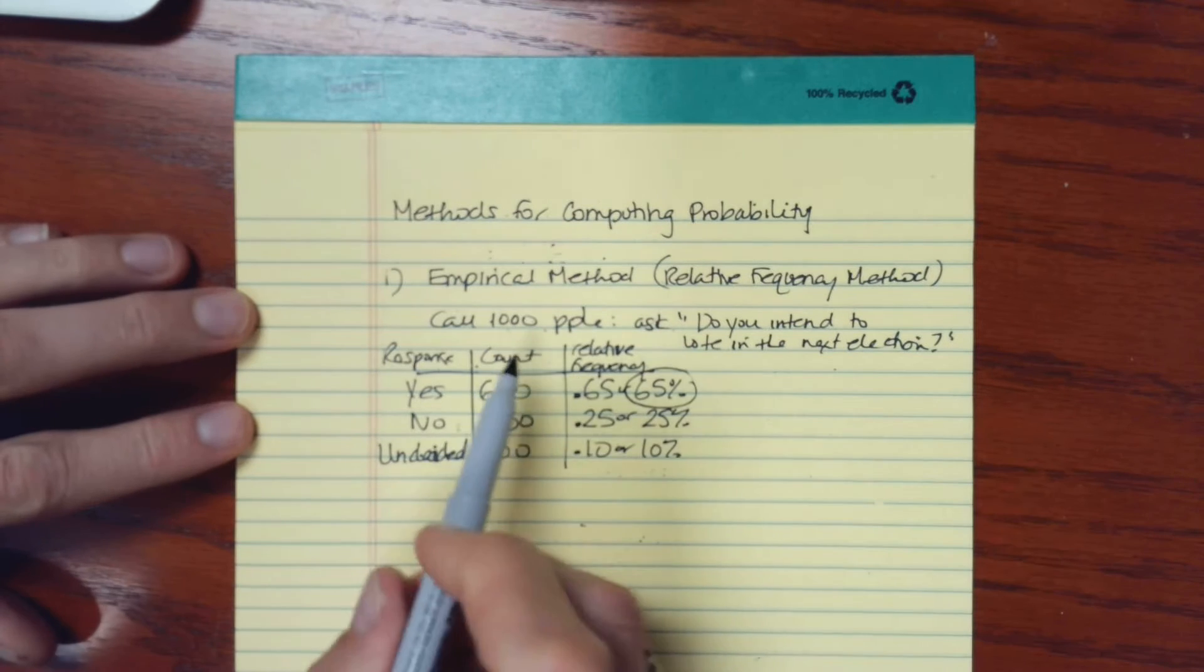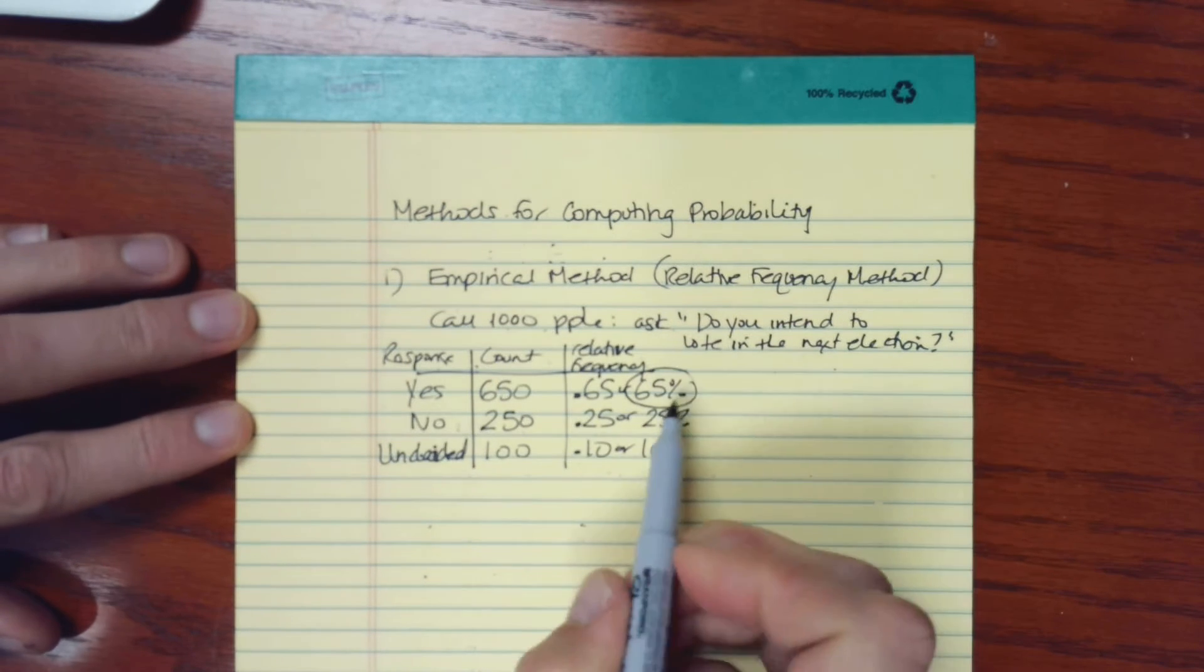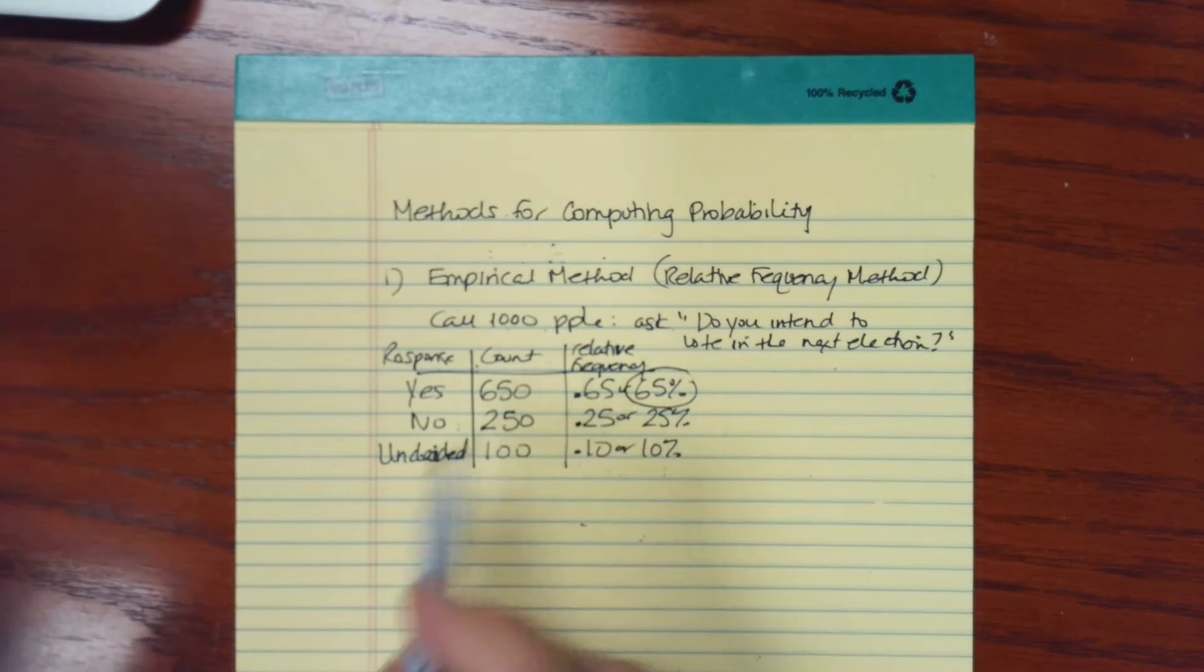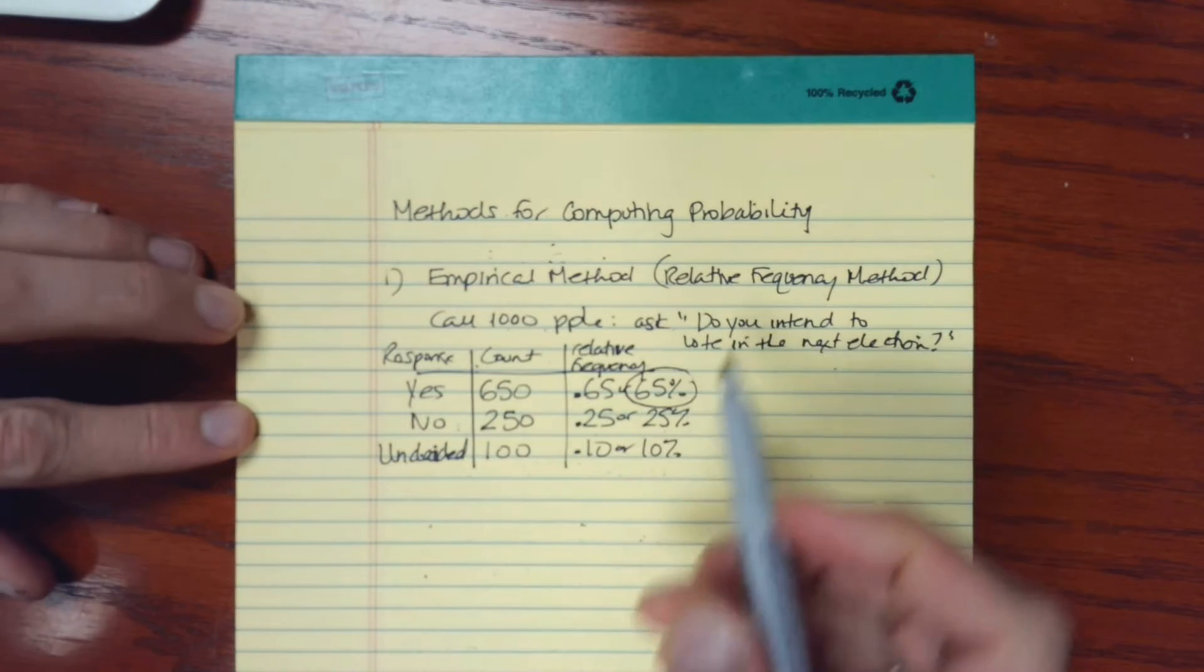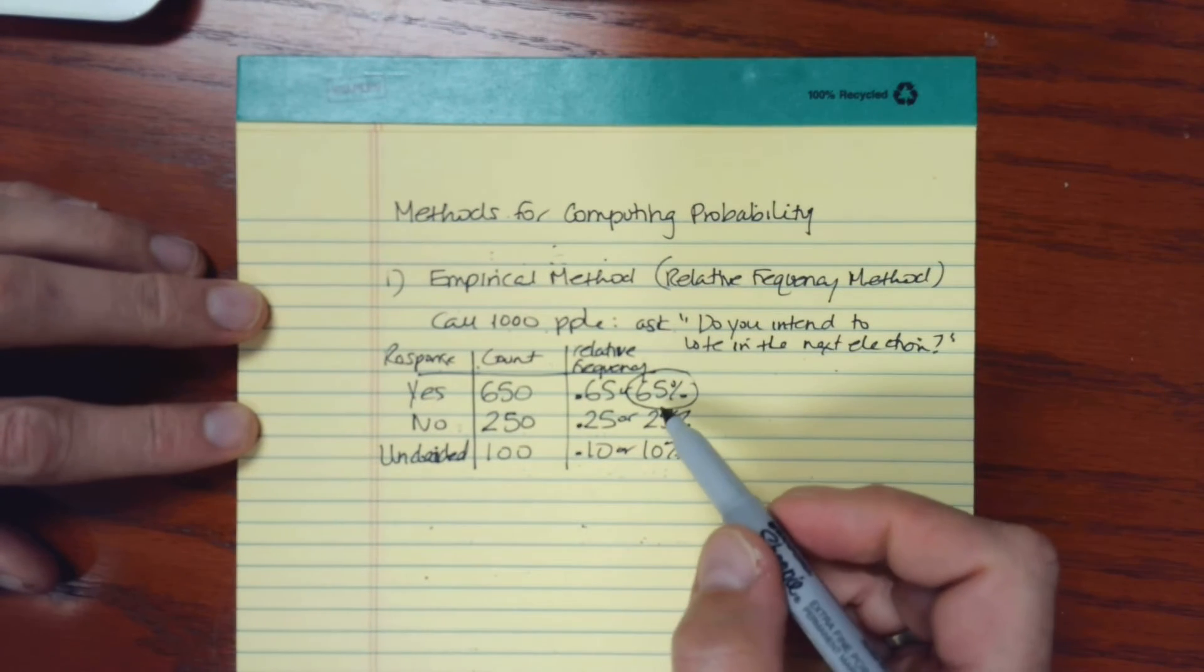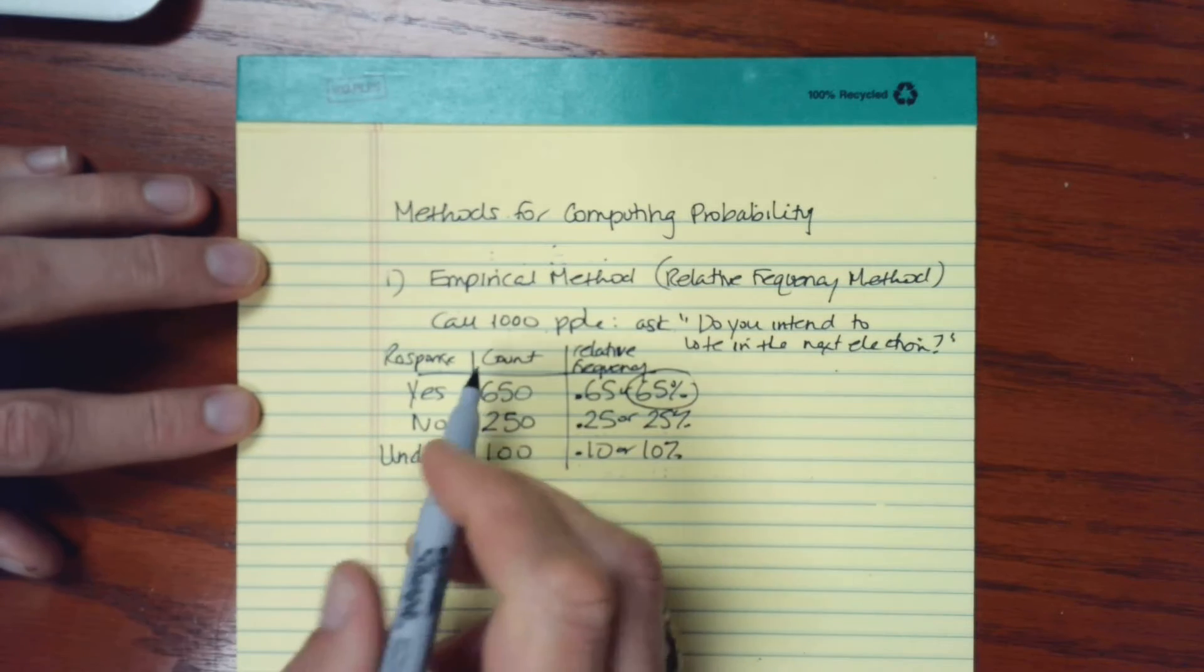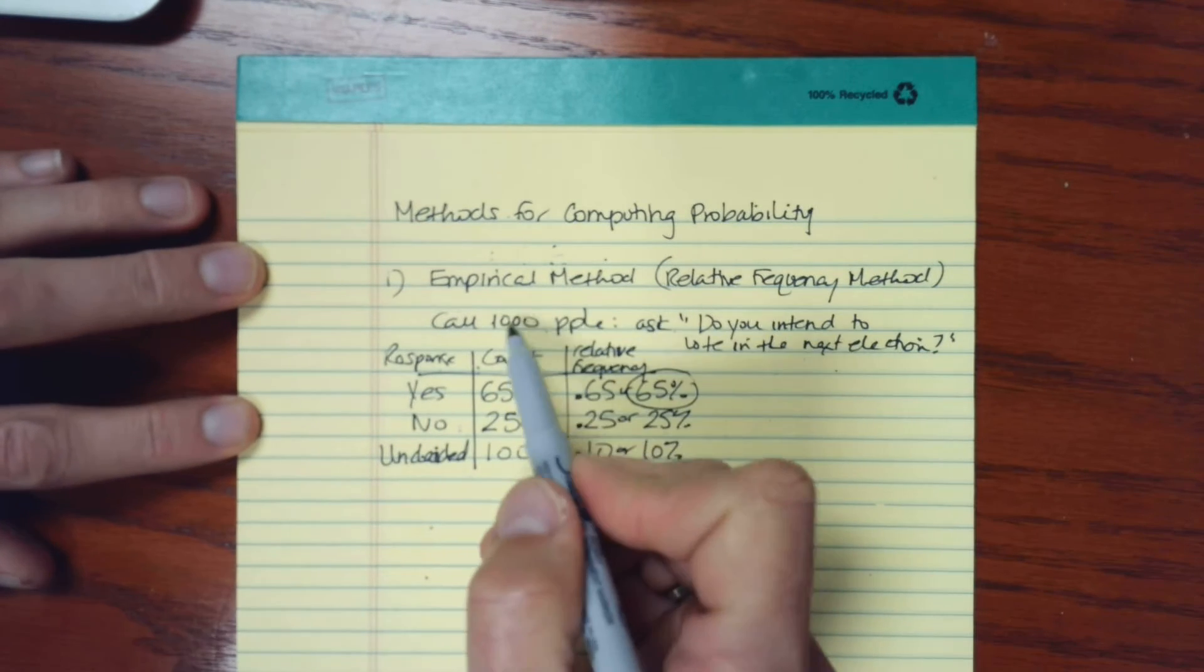As a reminder, the more data that we collect, the better these estimates are going to be. In fact, in the long run, if we could do this many, many times or infinitely many times, then we would say that this proportion is, in fact, the probability. That's one method, the empirical method. It involves actually conducting the experiment, and to get good results, you need to do it many times.